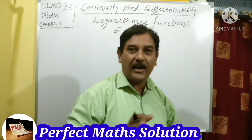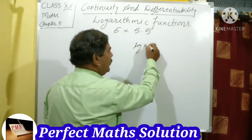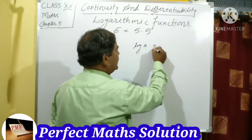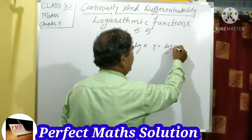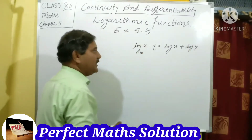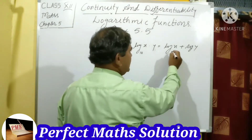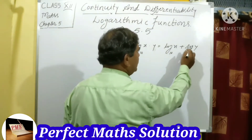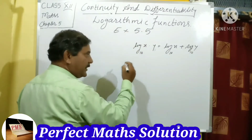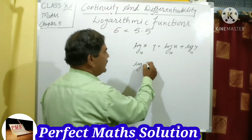The first formula: log(x × y) is equal to log x plus log y. The base here is 10, so log(x × y) to the base 10 is equal to log x to the base 10 plus log y to the base 10. Clear? Now the second formula: if log(x ÷ y), when divided, log separates with subtraction.